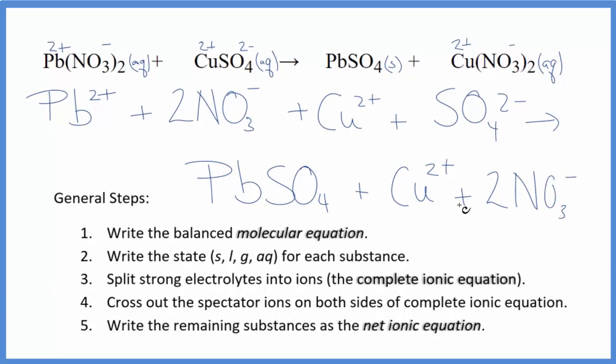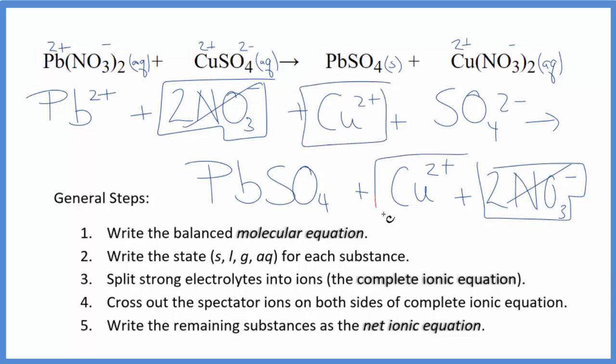And these are the products. So this is the complete or total ionic equation. Now we're going to cross out those spectator ions. They're on both sides of the complete ionic equation. So in the reactants, I see I have two nitrate ions. I also have that in the products. Cross that out. Then I see the copper 2 ion right here, and again in the products.